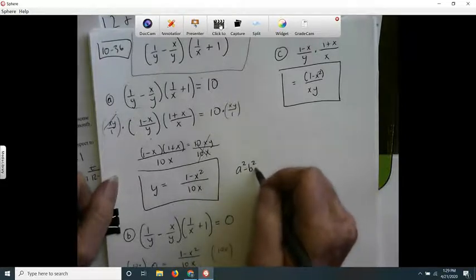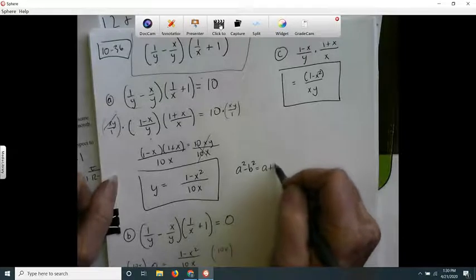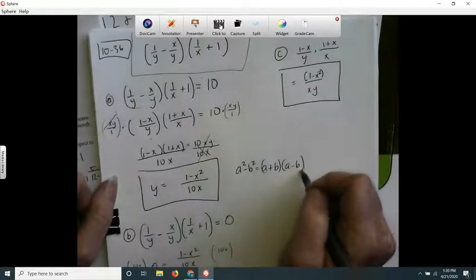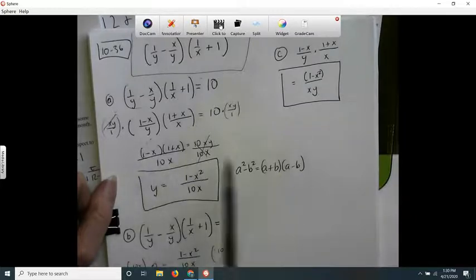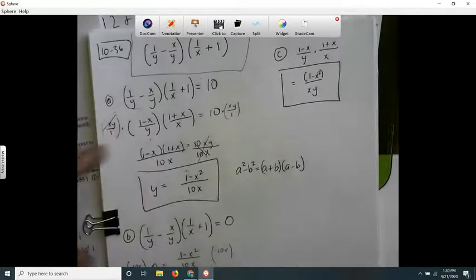a squared minus b squared equals (a plus b) times (a minus b). This is a pattern. I didn't write the squared part on 1 because 1 squared is 1.